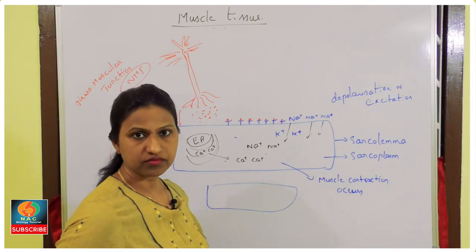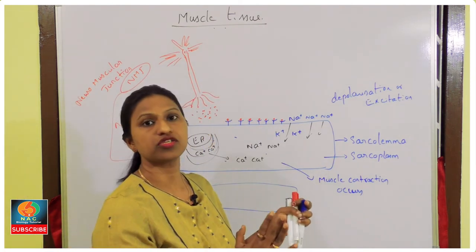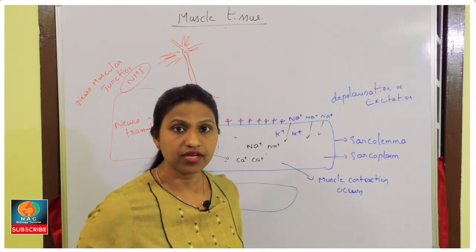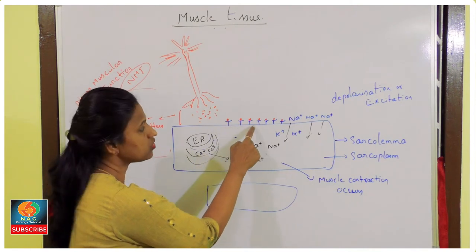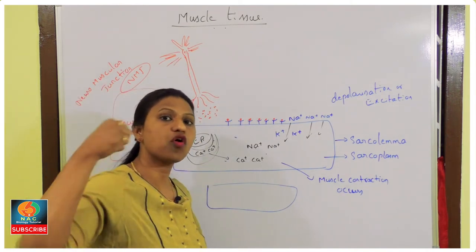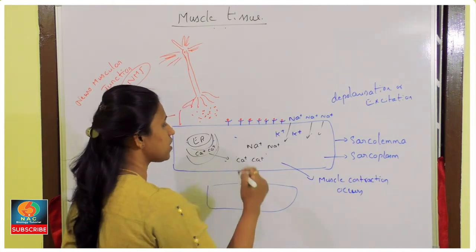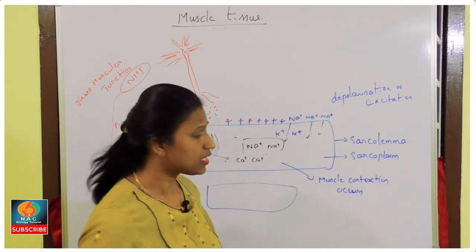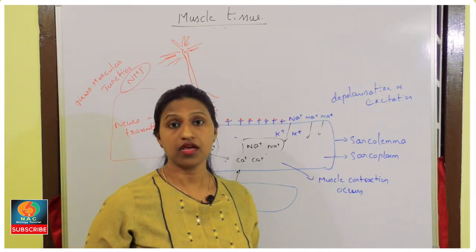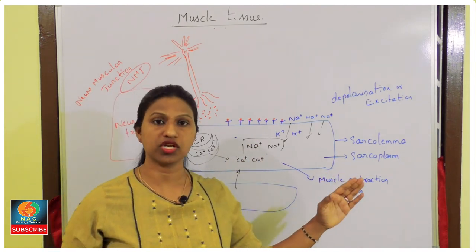When we stop running and reach a safe place, the muscles need to relax. The neurotransmitters are taken back by the neurons, sodium goes back outside the membrane, and calcium re-enters the endoplasmic reticulum — the muscle returns to its original state. This cycle repeats whenever muscles contract.